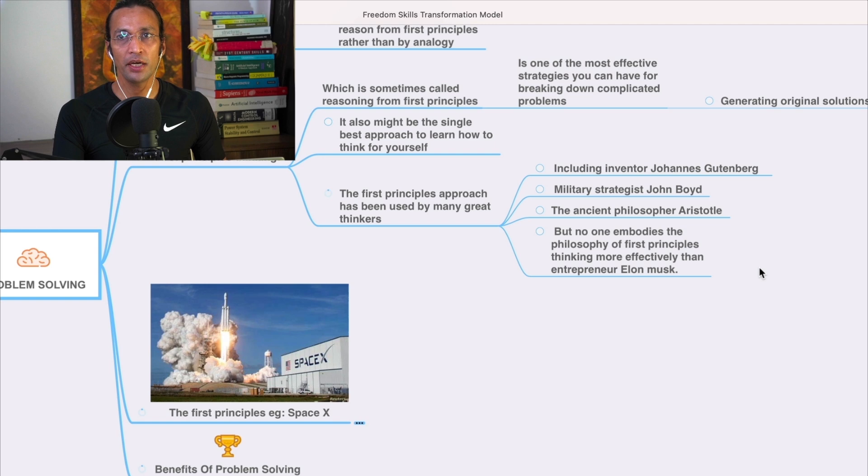He applied first principles thinking: not accepting the base value of existing players, rather going very deep, understanding the concept, applying the concepts, and coming up with a solution. There are a lot of people who have applied this, like military strategist John Boyd, but nobody has applied it like Elon Musk has in entrepreneurship.